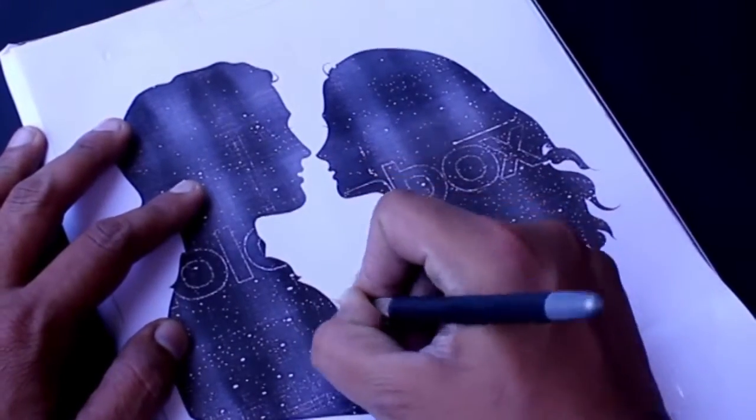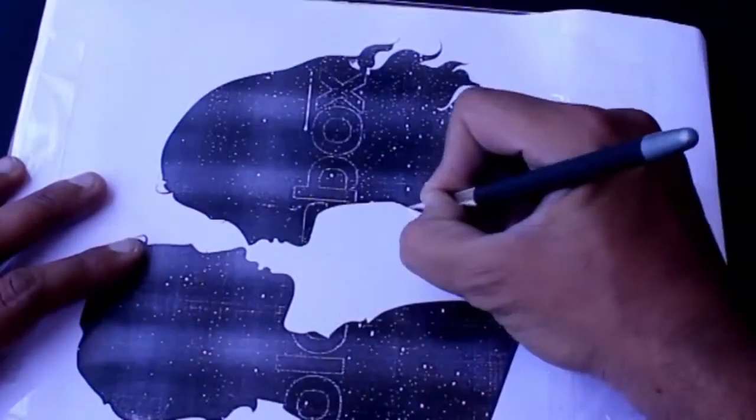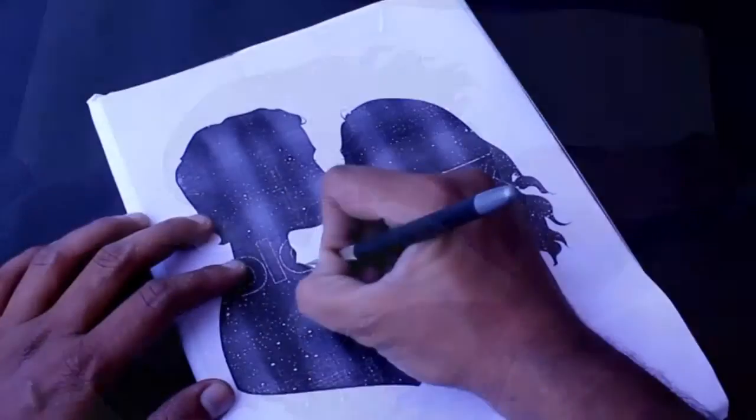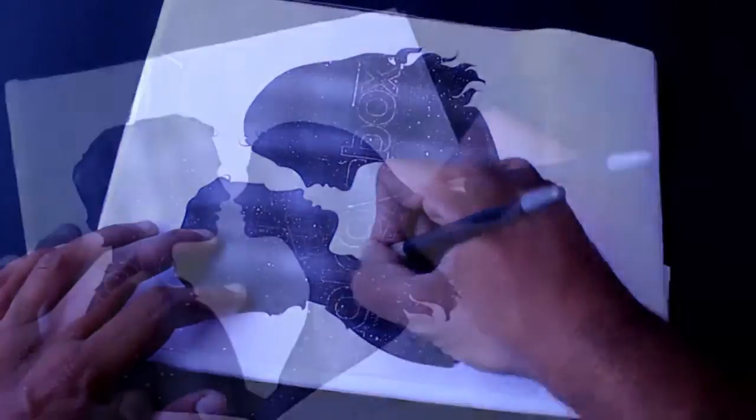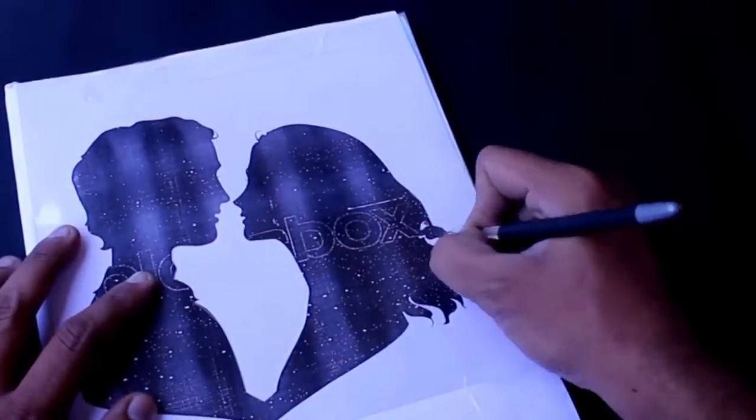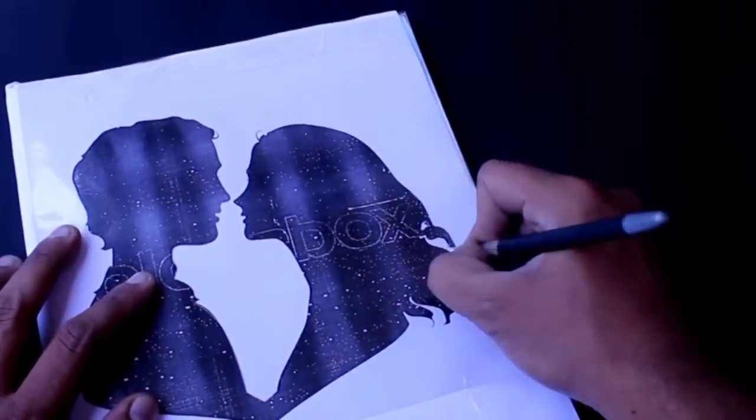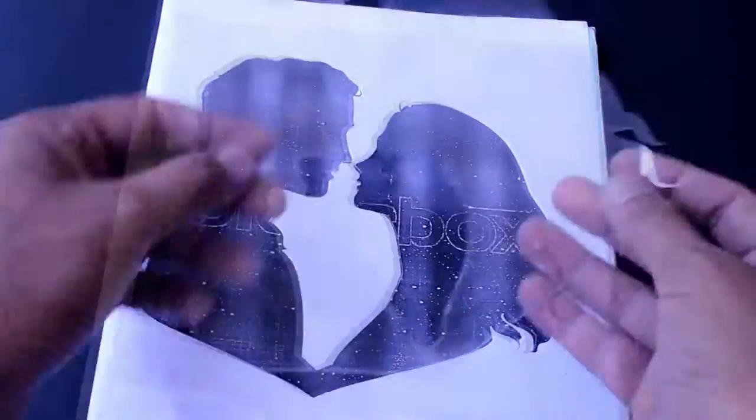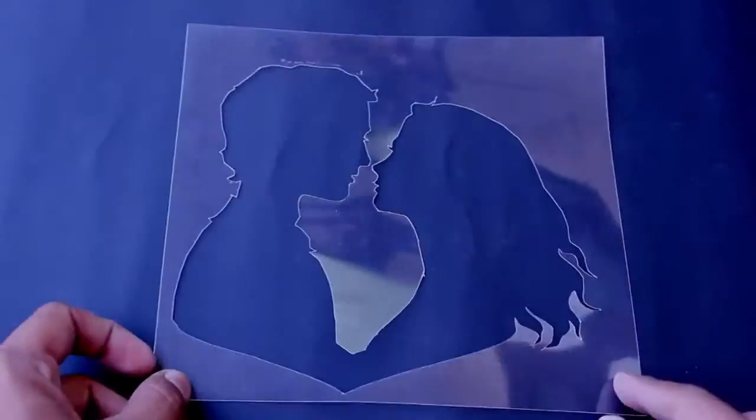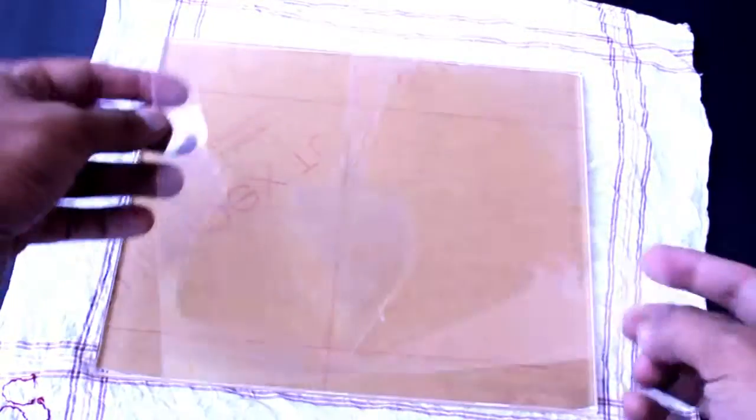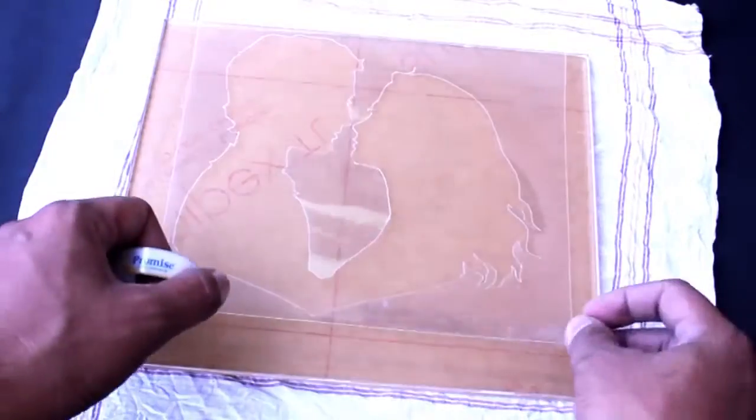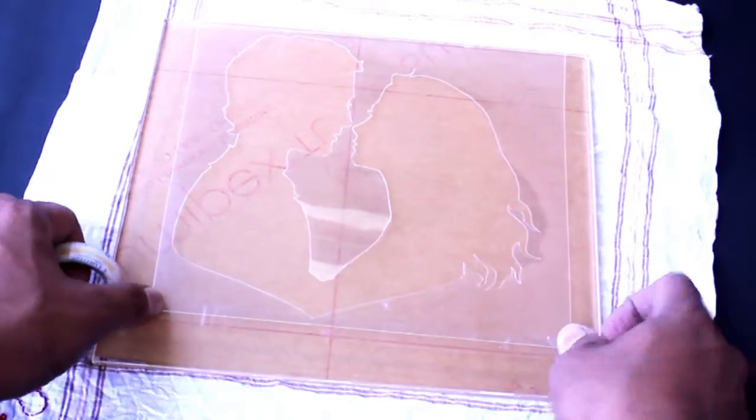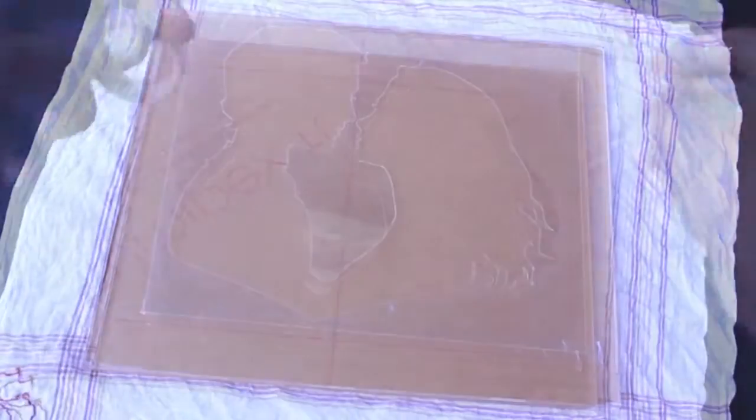Remove the cut portion and here is our stencil design ready. Stick the design stencil over the acrylic sheet. Place all the arrangement over a soft cloth to avoid scratches on the glass. For this reason, I haven't removed the back protective layer over the acrylic sheet.